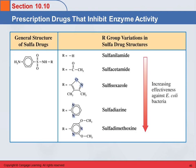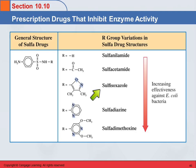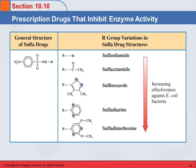There's a group of these different drugs that vary in their R group. So there's sulfanilamide, sulfacetamide, sulfisoxazole, etc., and they're shown here in order of increasing effectiveness against E. coli. One antibiotic will not work against all bacteria, so you choose the antibiotic appropriately for the bacteria you need to fight.